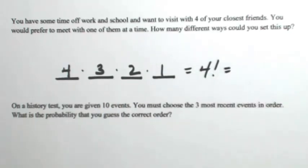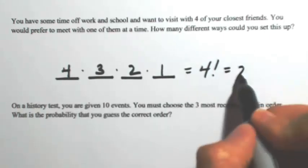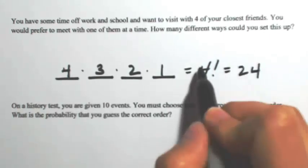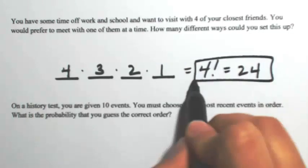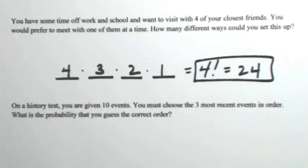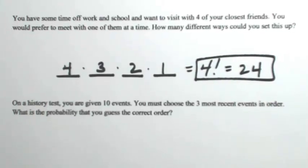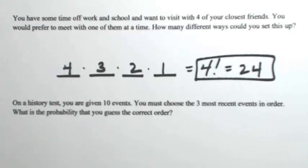Four factorial, using that exclamation mark on your calculator, gives you 24. In both of those examples, we used all of the things that were given to us. So let's try a couple more where we're not using everything.